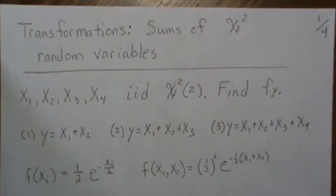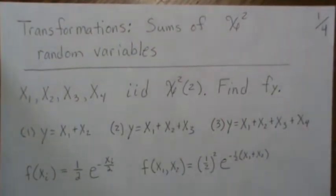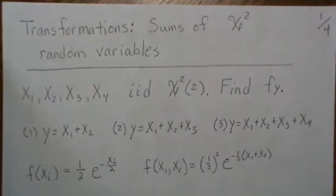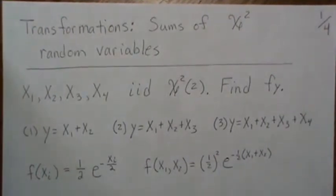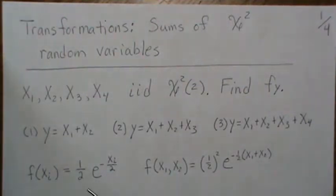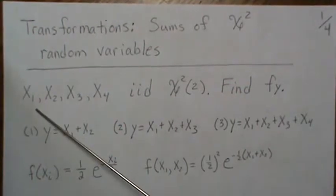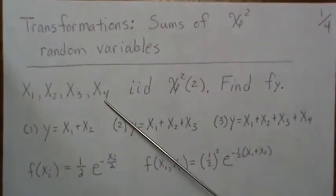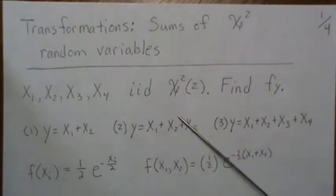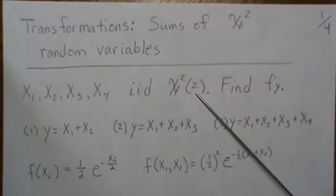Hello, this is the next video in a series I'm calling 'Transformations of Random Variables,' and we're going to look at the distribution of the sums of chi-square random variables. For this video we're going to look at x1 through x4 that are chi-squared with two degrees of freedom.